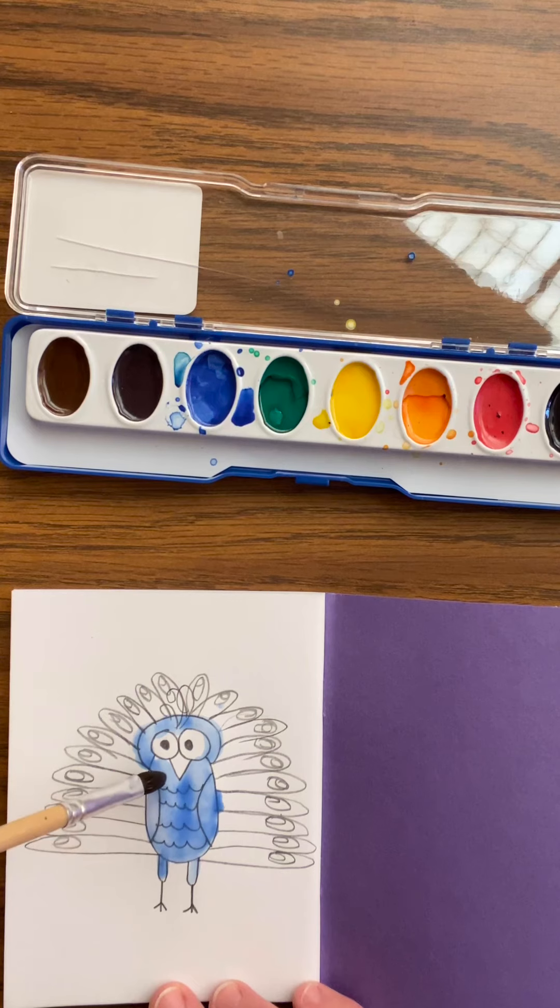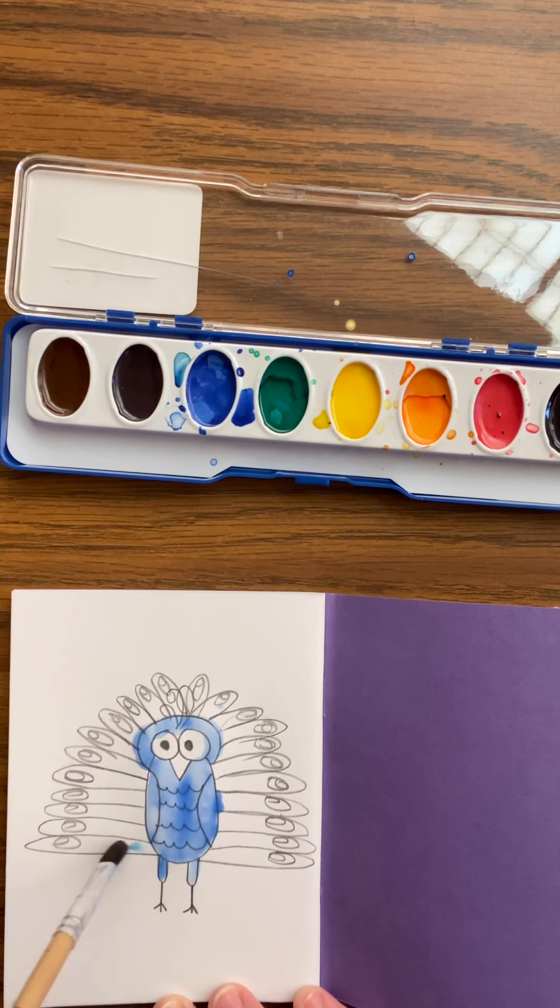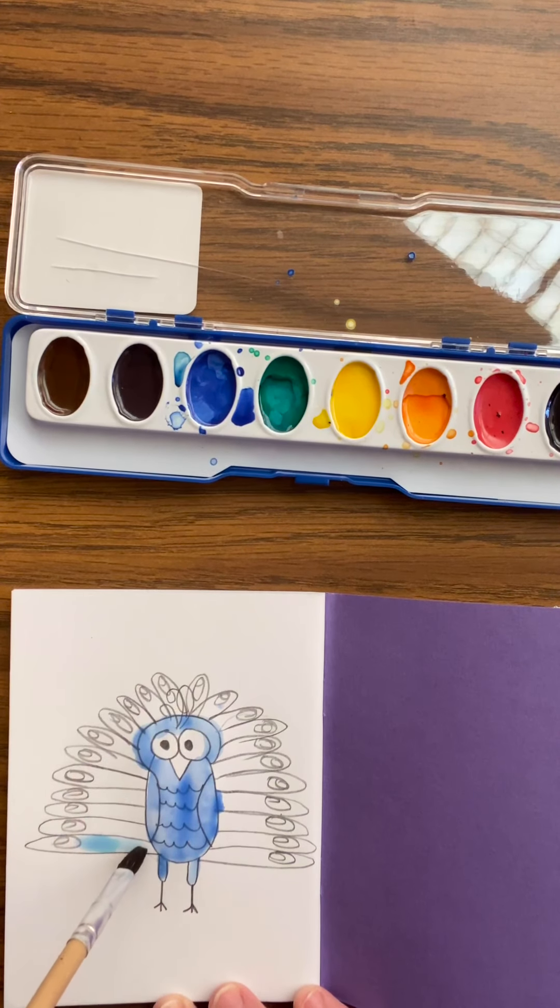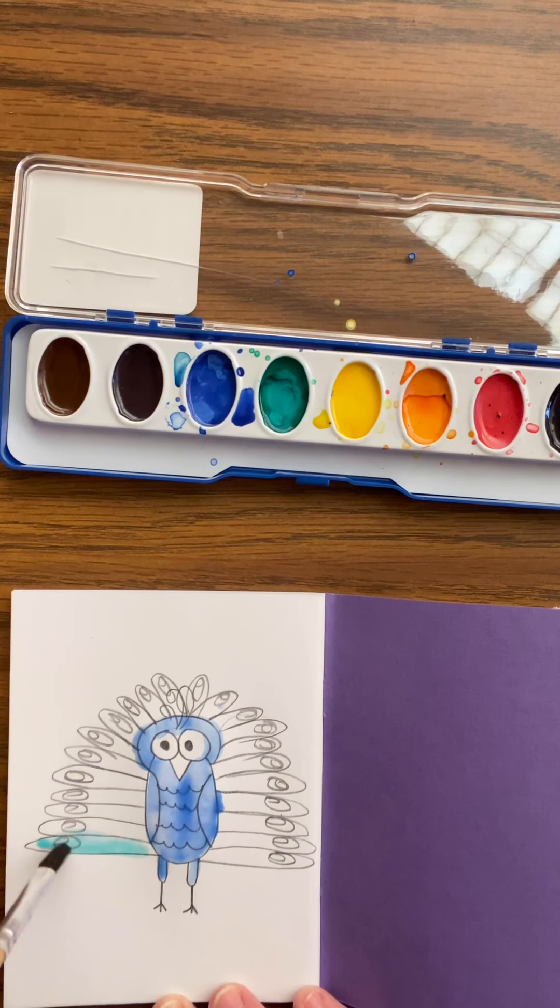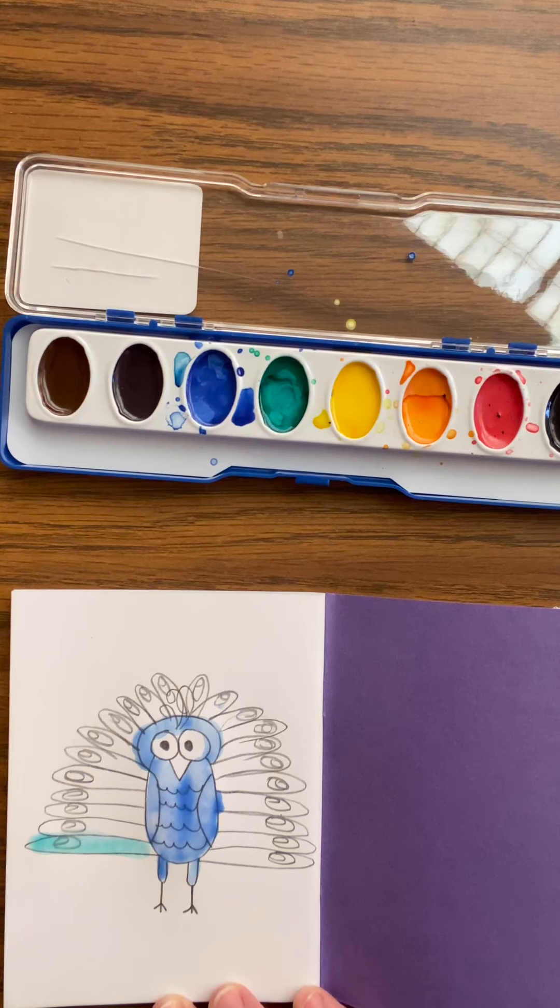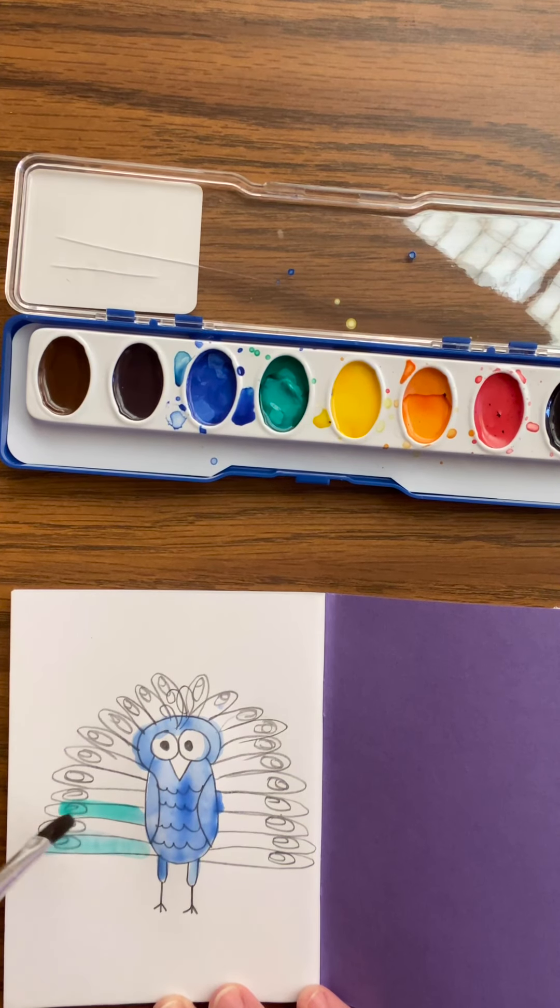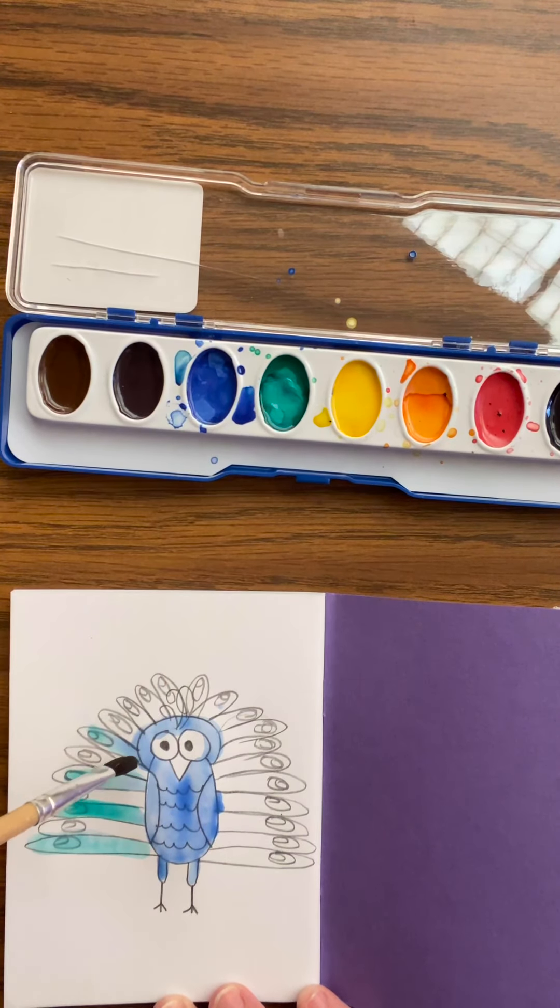Because we use blue to create purple and green, it doesn't matter if our green touches our blue a little bit. If we're using green to start our peacock tails, and I usually create each tail feather the opposite way of the last. So I'm going to skip one because it'll be purple later. And if a little blue gets in my green, it's okay. We can't make green without blue anyway. There's already blue and green. Won't hurt a single thing.